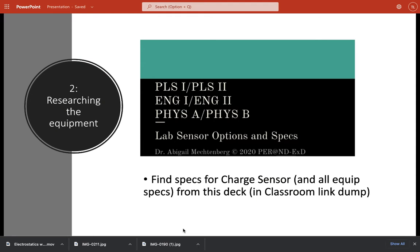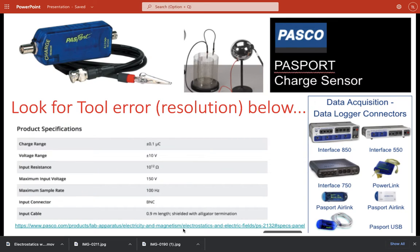In general, here's something we won't do every time, but you've got to know how to do it. There is a document in the link dump that applies to Physics B, and it's all of the lab sensors, options, and specs that are used throughout all of Physics Lab here. In particular, there's a page for the passport charge sensor that we're going to use.